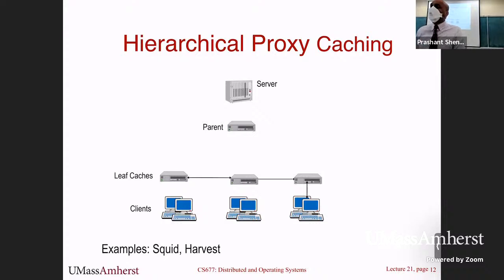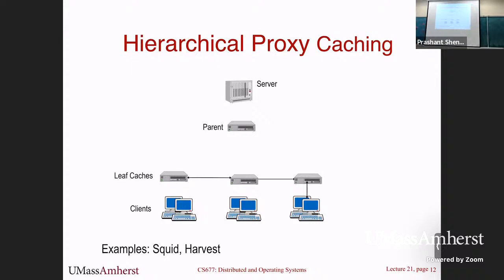Can different proxies in a hierarchical system use different consistency mechanisms — some push, some pull? That would be problematic because you want a uniform way of maintaining consistency. If the caches are totally independent and don't talk to each other, they can each use whatever consistency they want. But when you have a set of caches interacting with each other, it is better to use a uniform consistency mechanism so you don't end up with stale content in some caches while others have fresh content.